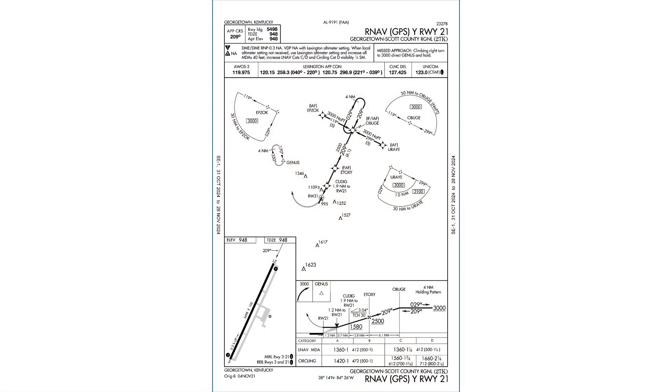A non-precision approach, like this GPS approach with LNAV minimums into Georgetown, Kentucky, doesn't have a constant descent rate as part of its guidance. We descend down to a minimum descent altitude and then make a decision on when to go below or to go missed based on what visual cues we get.